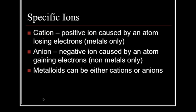When creating ions, we can either have a cation or an anion. A cation is a positive ion caused by an atom losing an electron — for the most part, the only types of elements on the Periodic Table that lose an electron are metals. An anion is a negative ion caused by an atom gaining an electron. Metalloids are in the middle — they don't know if they're metals or non-metals, so they can either be a cation or anion; they can either gain or lose.